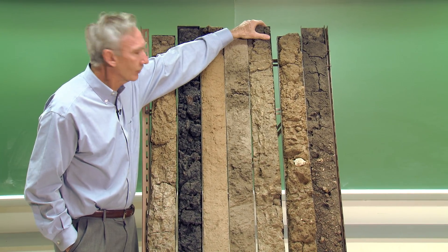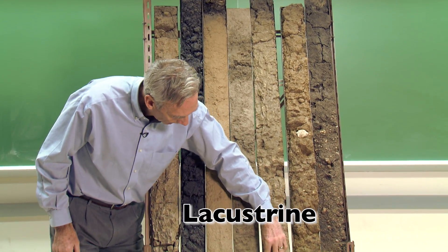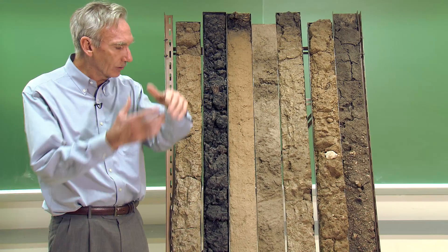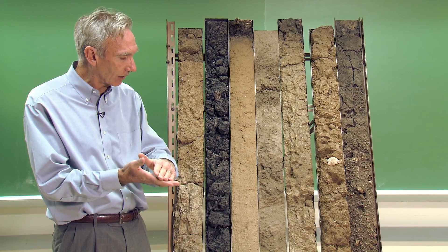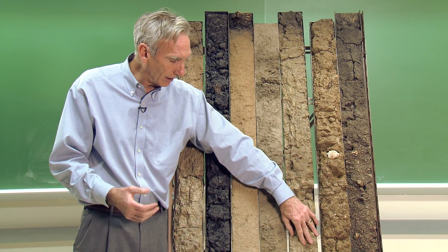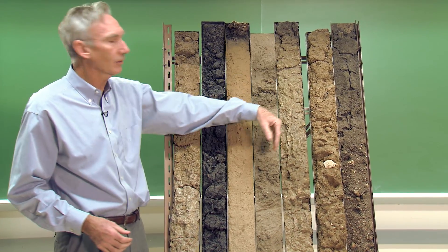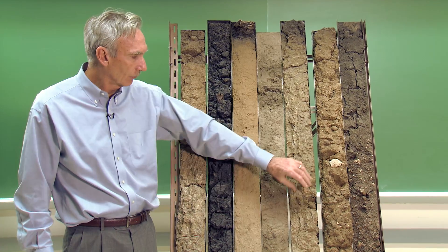The next soil profile has a lacustrine parent material. In the lacustrine parent material, you get bands going across down at the bottom in the C horizon — the parent material horizon — and in those bands are layers of silts and clays. When the huge lake that used to cover part of the Fort Wayne area evaporated, lots of silts and clays settled out. This soil is very difficult to pull a tillage implement through; it can be productive, but it takes a lot more energy to till.